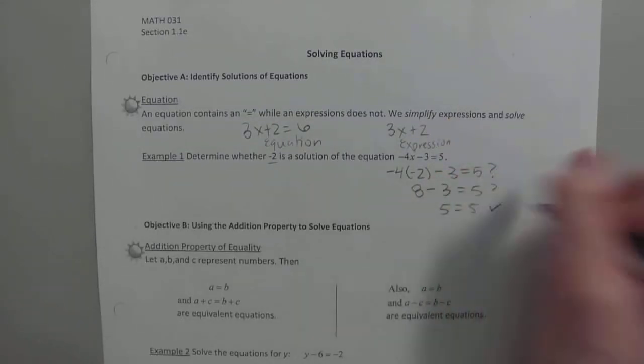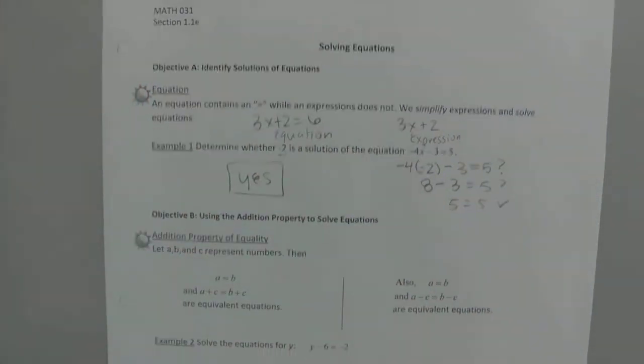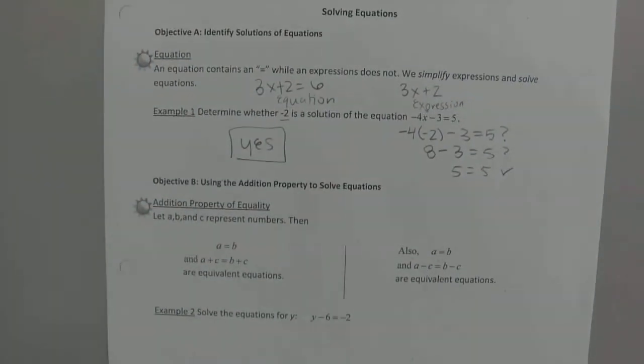It sure is. 5 equals 5. So on MyMathLab, you would choose the option yes, this was the solution. If you did that and the left did not equal the right, then you would choose no.